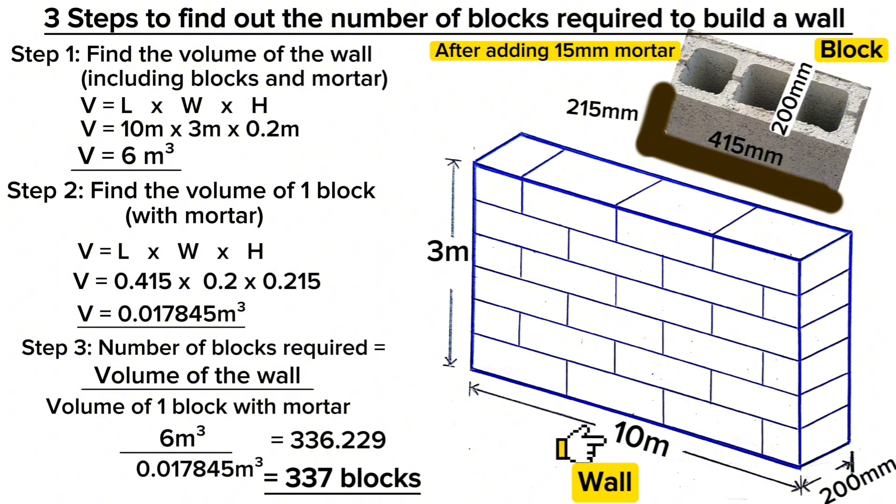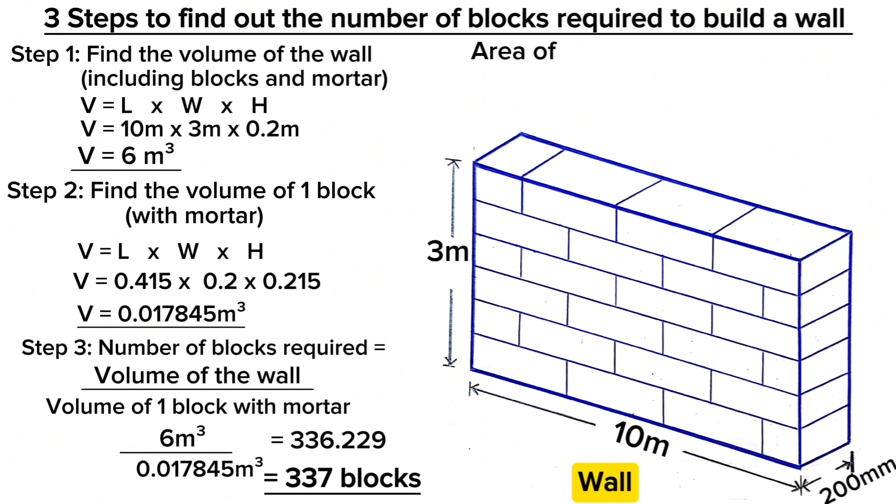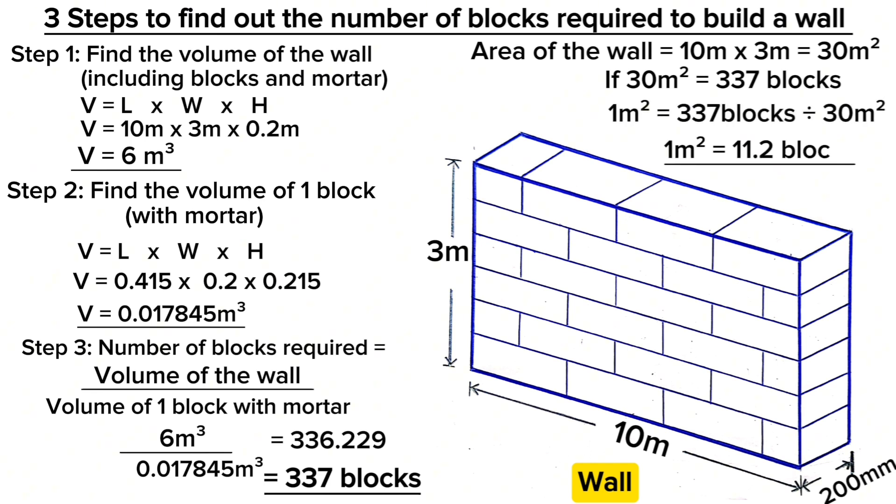Therefore, for a wall of 10 meters along the length and 3 meters along the height, you need 337 blocks. To put this in terms of area: 10m × 3m = 30 square meters. For a 30 square meter wall, you need 337 blocks, which means that for one square meter, you need 11.2 blocks. This answer only covers